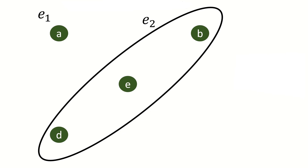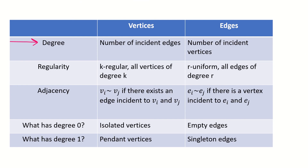Before we cover dual hypergraphs, let's compare terminology for edges and vertices. The degree of a vertex is the number of edges incident to it; the degree of an edge is the number of vertices incident to it. A K-regular hypergraph has all vertices incident to K edges; an R-uniform hypergraph has all edges incident to R vertices. Two vertices are adjacent if some edge contains them both; two edges are adjacent if some vertex is incident to both. Vertices with degree 0 are isolated vertices; edges with degree 0 are empty edges. Vertices with degree 1 are pendant vertices; edges with degree 1 are singletons.